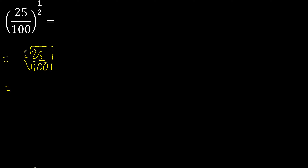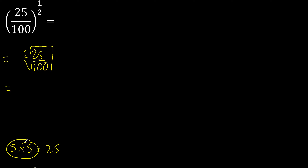2 equal numbers that multiply is 25 — 1, 2, 25. Equal numbers.